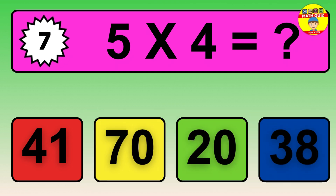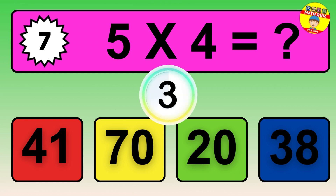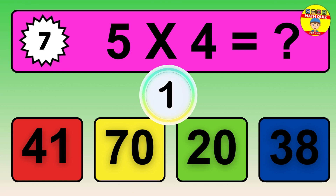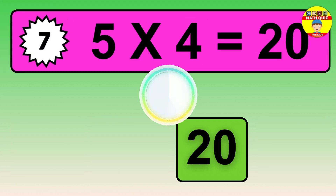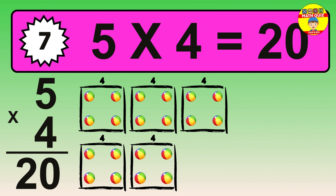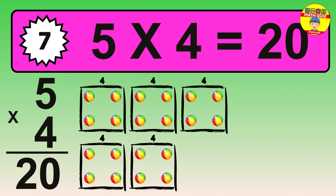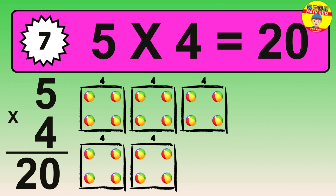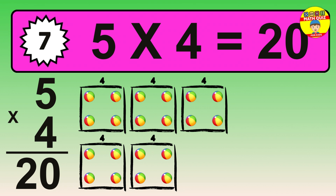Question 7. 5 times 4 equals what? The answer is 5 times 4 is 20. To calculate, we have 5 groups with 4 balls each one. So, how many balls do we have? 20 balls.